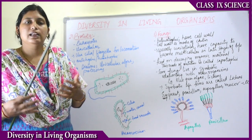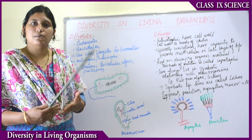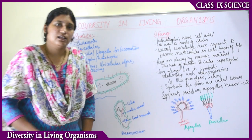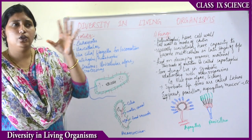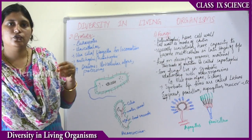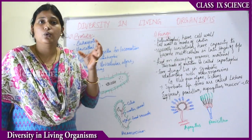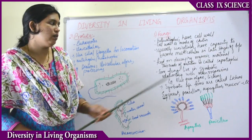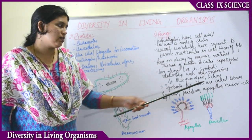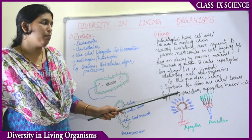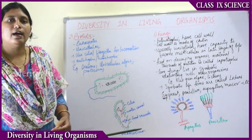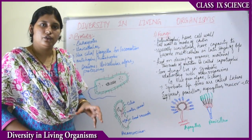Some fungi live in a symbiotic relationship with other organisms, meaning they live together with organisms like blue-green algae and form lichens. We see lichen growth on the bark of trees — a brownish-greenish color growth that develops. These symbiotic life forms are known as lichens.